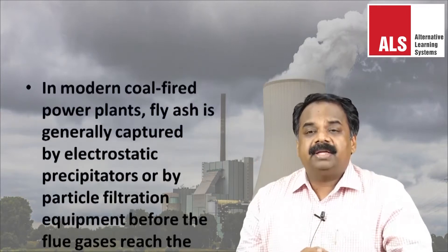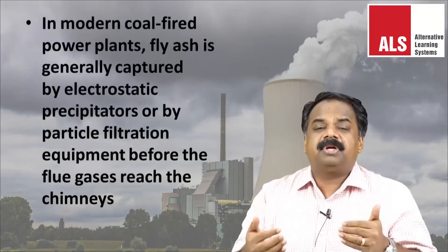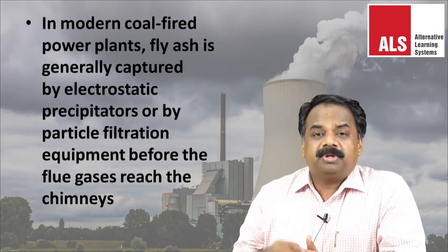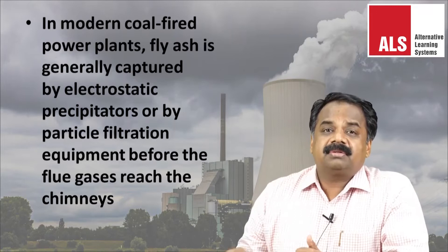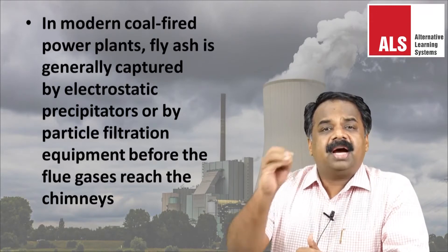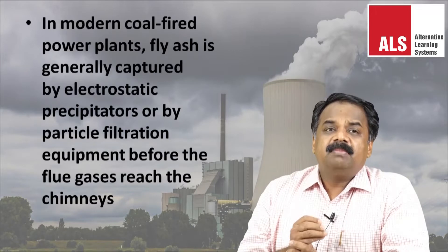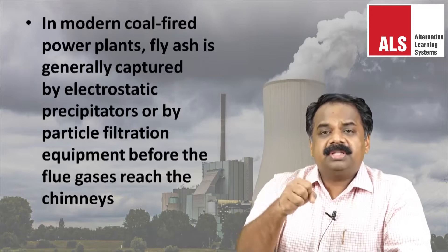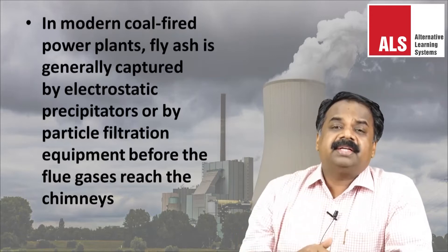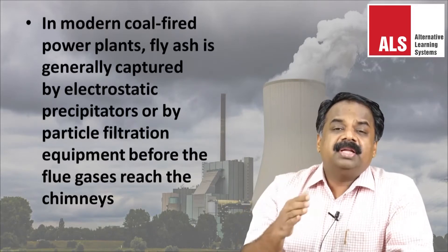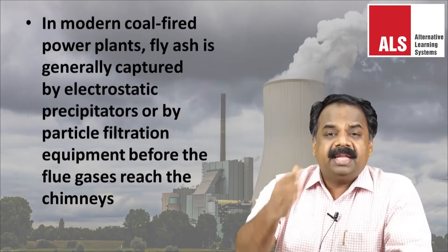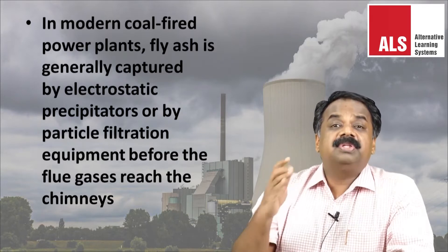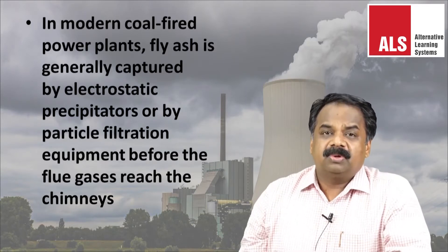In modern coal-fired power plants, fly ash is generally captured by electrostatic precipitators and other particulate filtration equipment before the flue gases reach the chimney. Once captured, the question is what to do with this fly ash. If it can be converted into waterproofing material, there is some utility, and at the same time it can reduce air pollution.